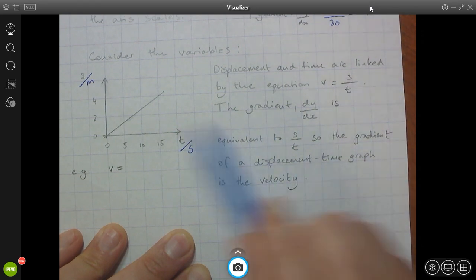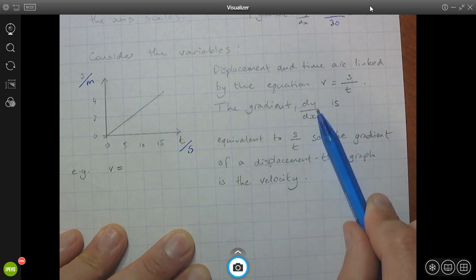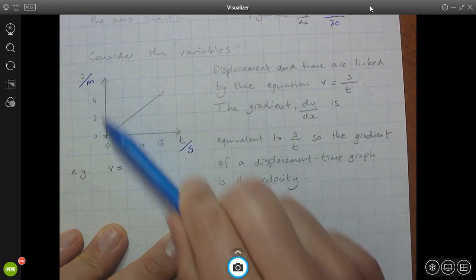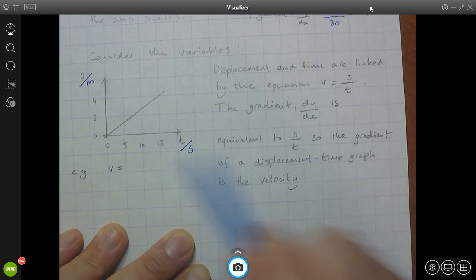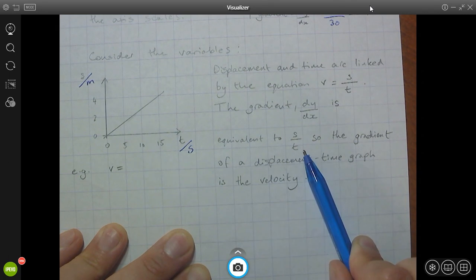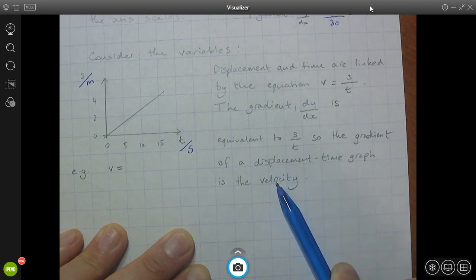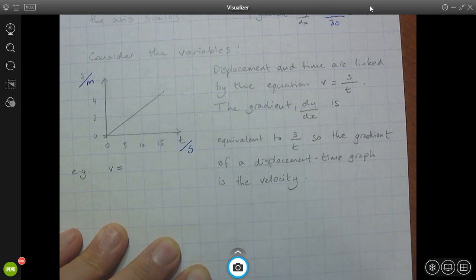Now, the gradient of this graph, dy by dx, is equivalent to the change in displacement divided by the change in time. And displacement divided by time is velocity. So the gradient of this displacement time graph is the velocity represented by this slope. So it's the velocity of an object represented by this slope.